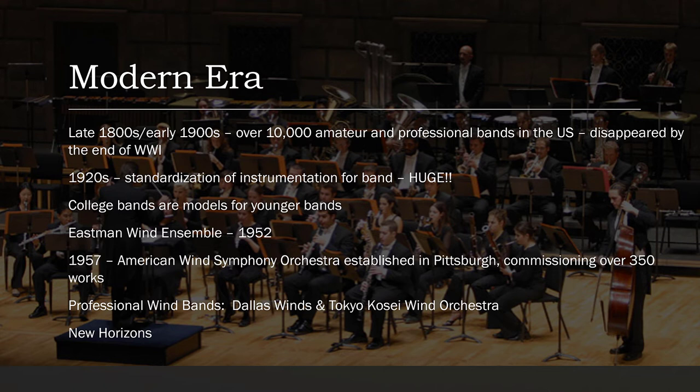In the modern era, we look at college bands as the models for younger bands. Instead of looking at something like the Pittsburgh Symphony as a model, we don't really have as many professional bands out there in the world. I have a couple listed on this slide, but mostly we're looking at the really good college bands as models. 1952 is important because that's when the Eastman Wind Ensemble was founded — the main principle being one player on a part, making it a smaller wind ensemble than the symphonic wind ensembles that colleges often have today.